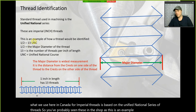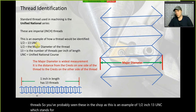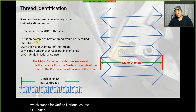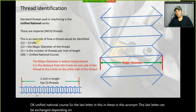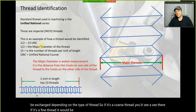The standard thread used here in Canada for imperial threads is based on the Unified National series. An example is a half-inch 13 UNC, which stands for Unified National Coarse. The last letter in this acronym can be exchanged depending on the type of thread.